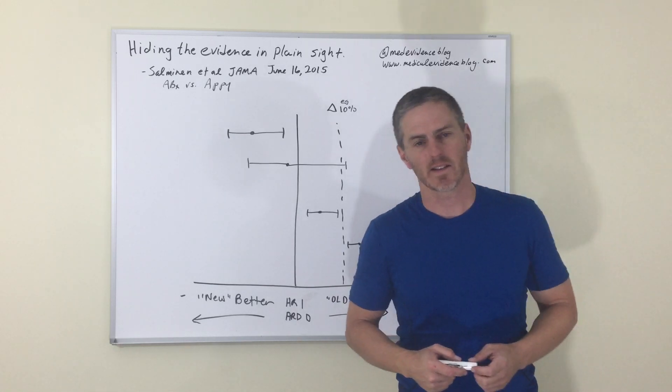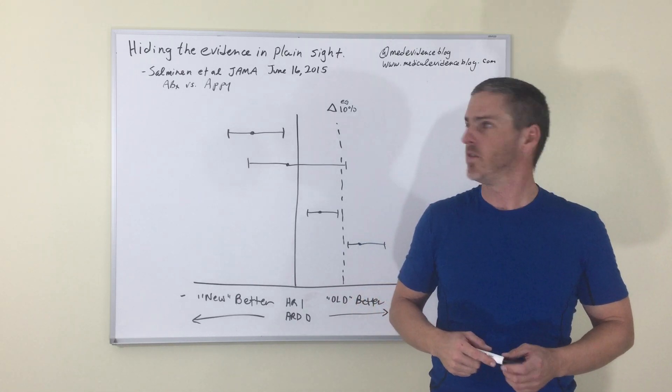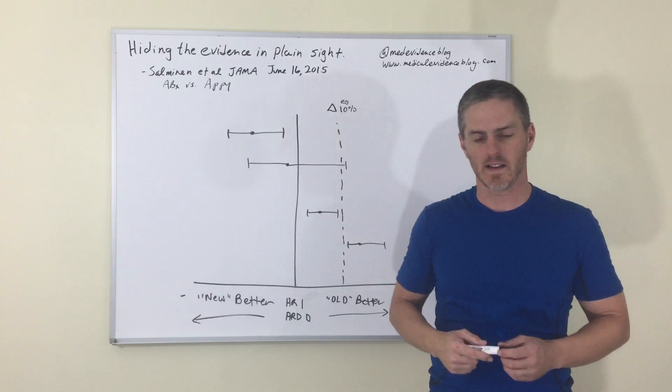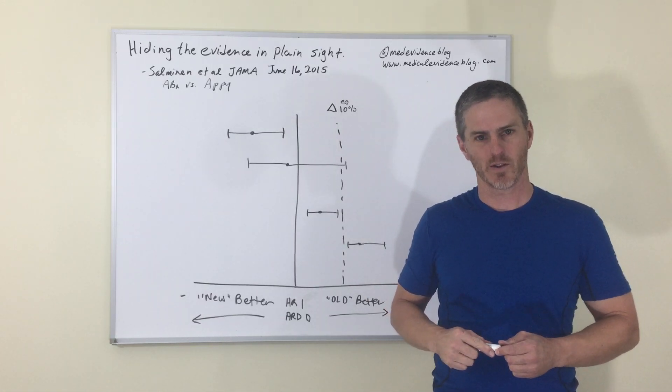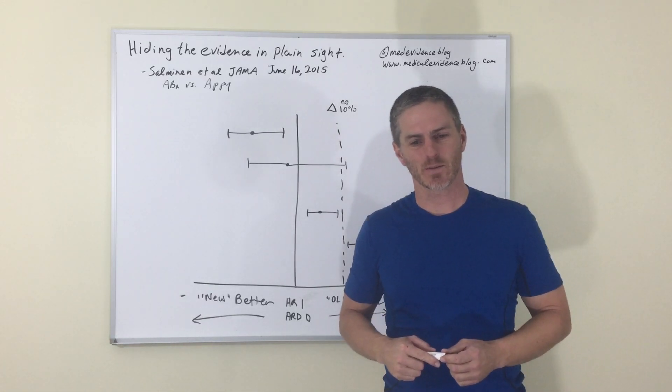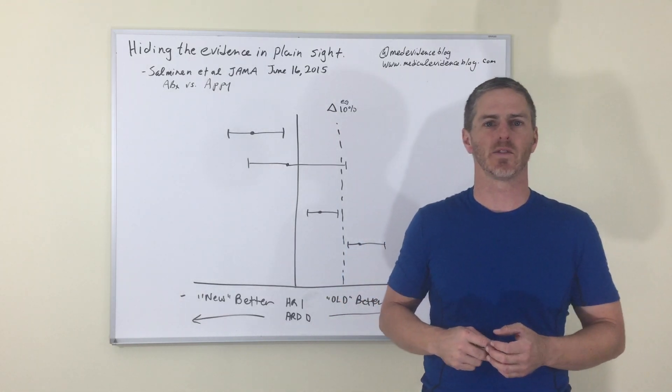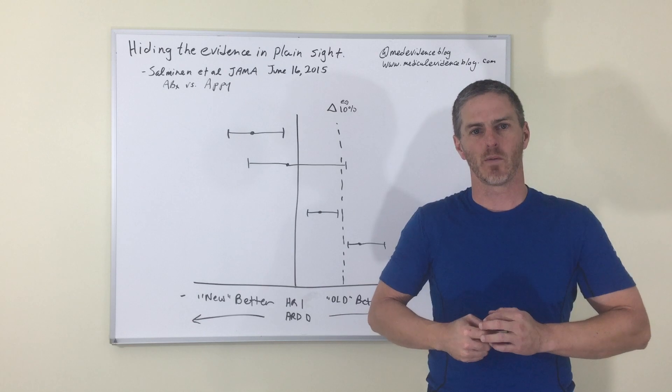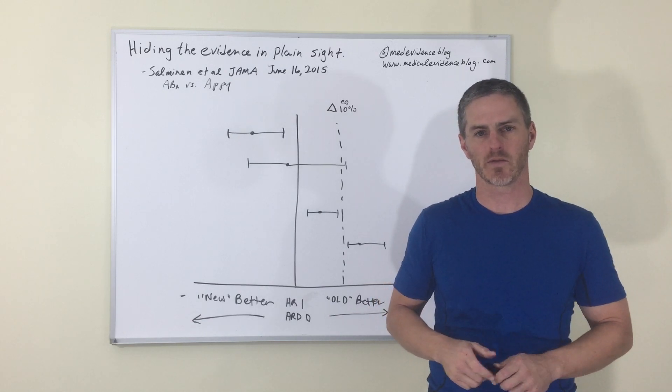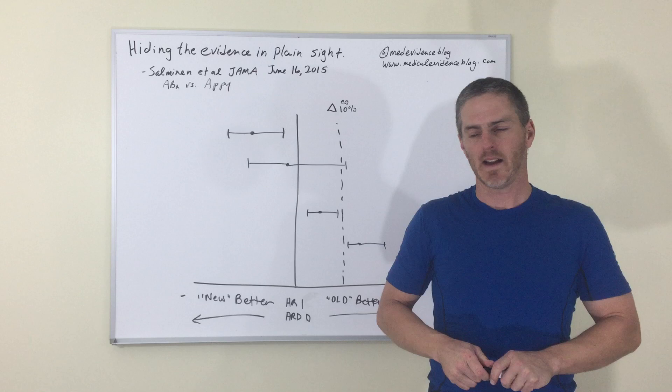The trial that compared appendectomy versus antibiotics alone for the treatment of acute appendicitis. And I've titled this talk Hiding the Evidence in Plain View or in Plain Sight because, well, you'll see. But before we get to the actual results, this won't be an entire journal club on the article. I'm just going to highlight the results and how they fit in to the framework of the interpretation of non-inferiority trials.